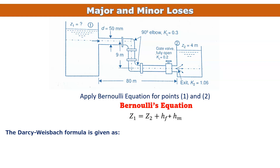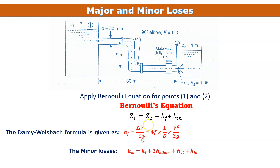From the Darcy-Weisbach formula, hf = 4f × (L/D) × v²/2g. Minor losses hm include: entrance effect, two 90-degree elbows, one gate valve, and exit effect — so there are four sources of minor losses.